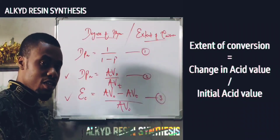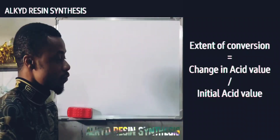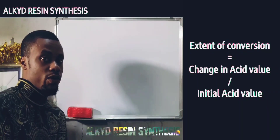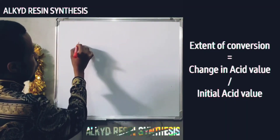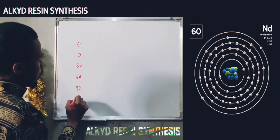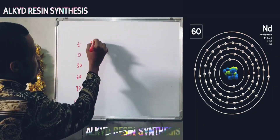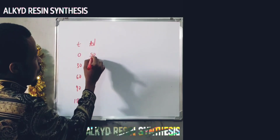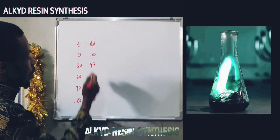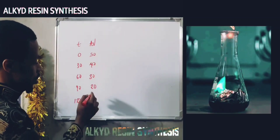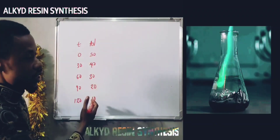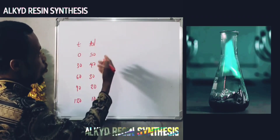Let's say we've carried out the synthesis and obtained these results. At time 0, 30, 60, 90, and 120 minutes, the corresponding acid values are 50, 40, 30, 20, and 10. As you can see, as time increases, the acid value drops. Once the acid value reaches 10 or less, you are expected to halt the reaction. This is an example of what your synthesis data should look like.